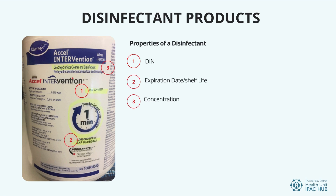Number three, the concentration required for use. Products can either be ready to use — sometimes designated as RTU — or they may come in a concentrated form that requires dilution for safe use. Always check the bottle or packaging to ensure you know what your product is and how it is to be used effectively. Many companies offer the same product in two different forms — concentrate or ready to use. Always check to prevent chemical burns and misuse.